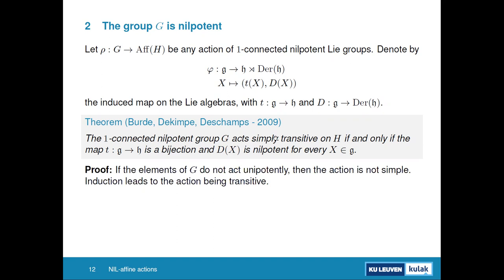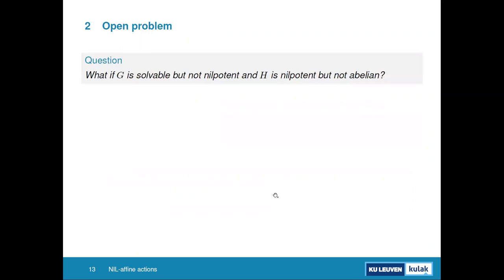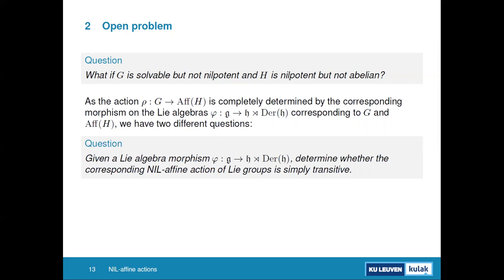The key point is that if D(X) is not nilpotent, the action will not be by unipotent elements and simpleness fails. To summarize what was known: when H is abelian, everything is known up to dimension 4; when G is nilpotent, everything is known up to dimension 5. The big open question was: what if G is solvable but not nilpotent, and H is nilpotent but not abelian?